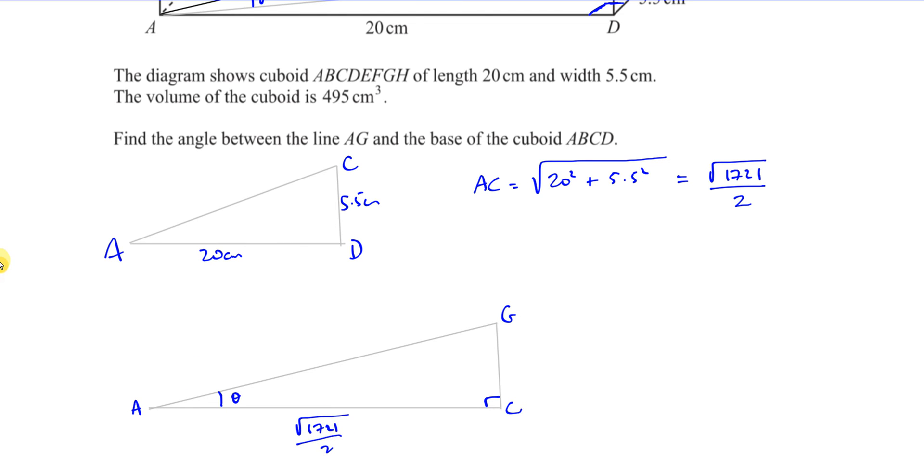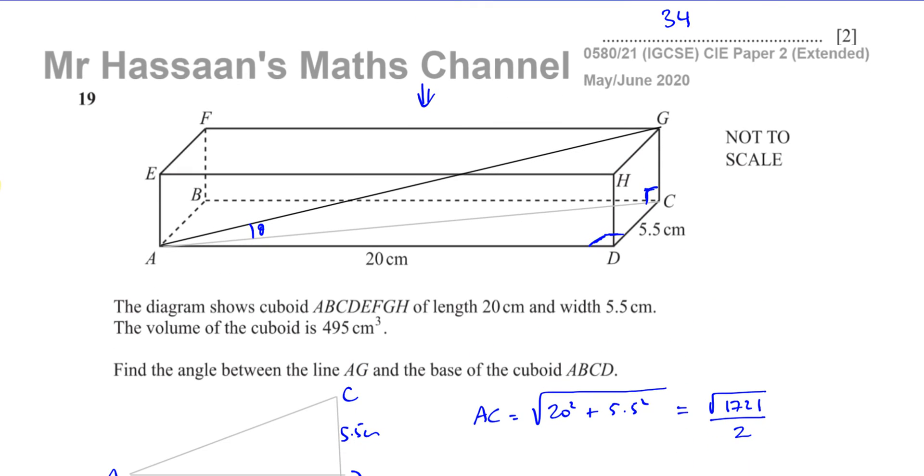We need to find another length of this triangle. We need to find another length. Now, to find another length, we definitely need the height of the triangle. We need the height of the triangle, which is the height of the cuboid.